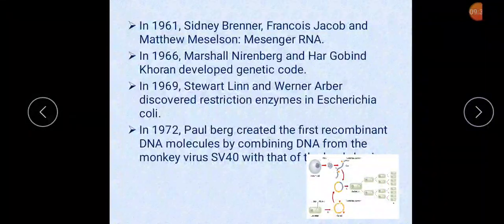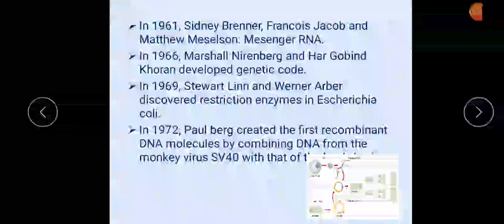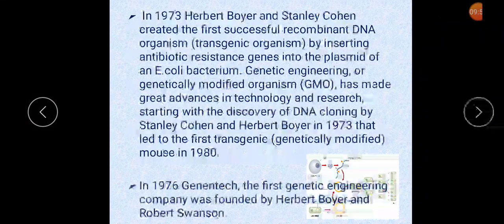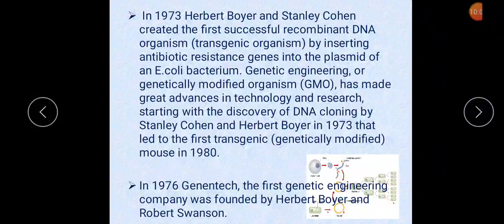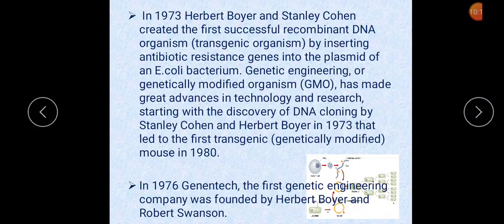In 1972, Paul Berg created the first recombinant DNA molecules by combining DNA from the monkey virus SV40 with that of a phage virus. In 1973, Herbert Boyer and Stanley Cohen created the first successful recombinant DNA organism — a transgenic organism — by inserting antibiotic-resistant genes into the plasmid of an E. coli bacterium.